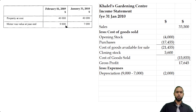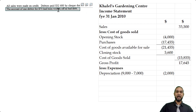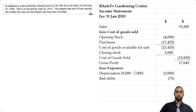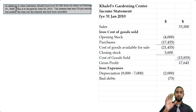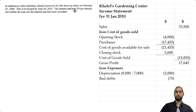Let's scroll down to check out the other expenses. The bad debt item of $75 goes in as an expense. Then from note three, Kalel borrowed $2,000 from his sister from the very start of the year at 5% per annum, and neither the loan nor the interest has been recorded. So the interest expense is simply 5% of $2,000, giving us $100.